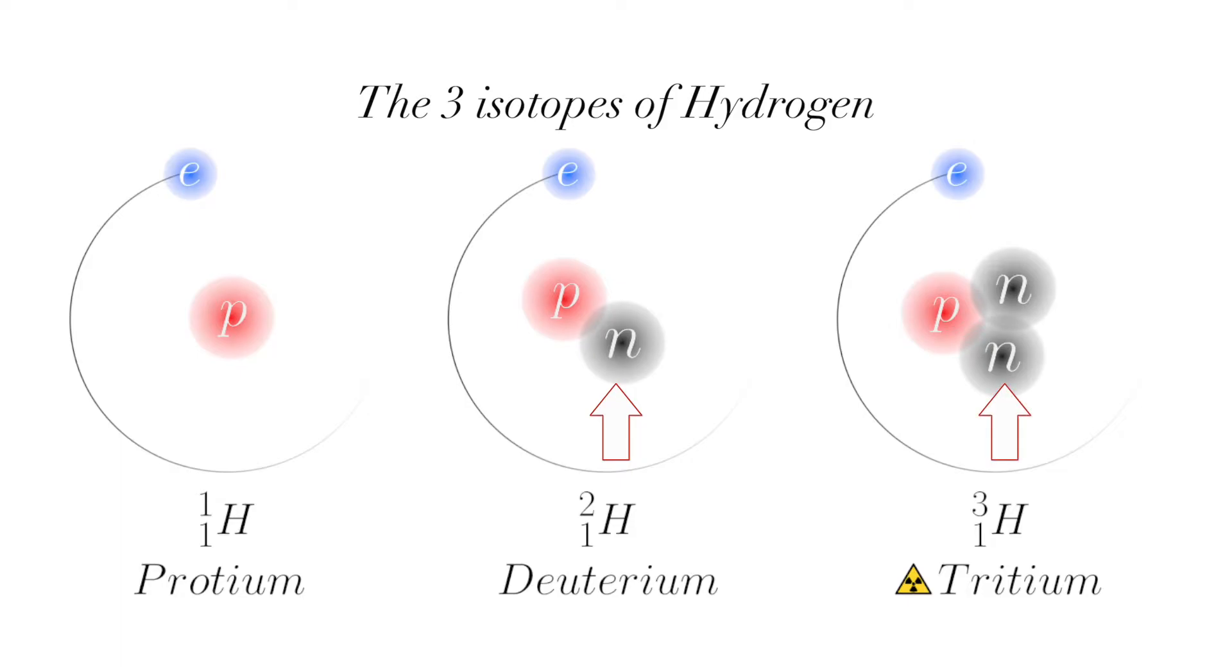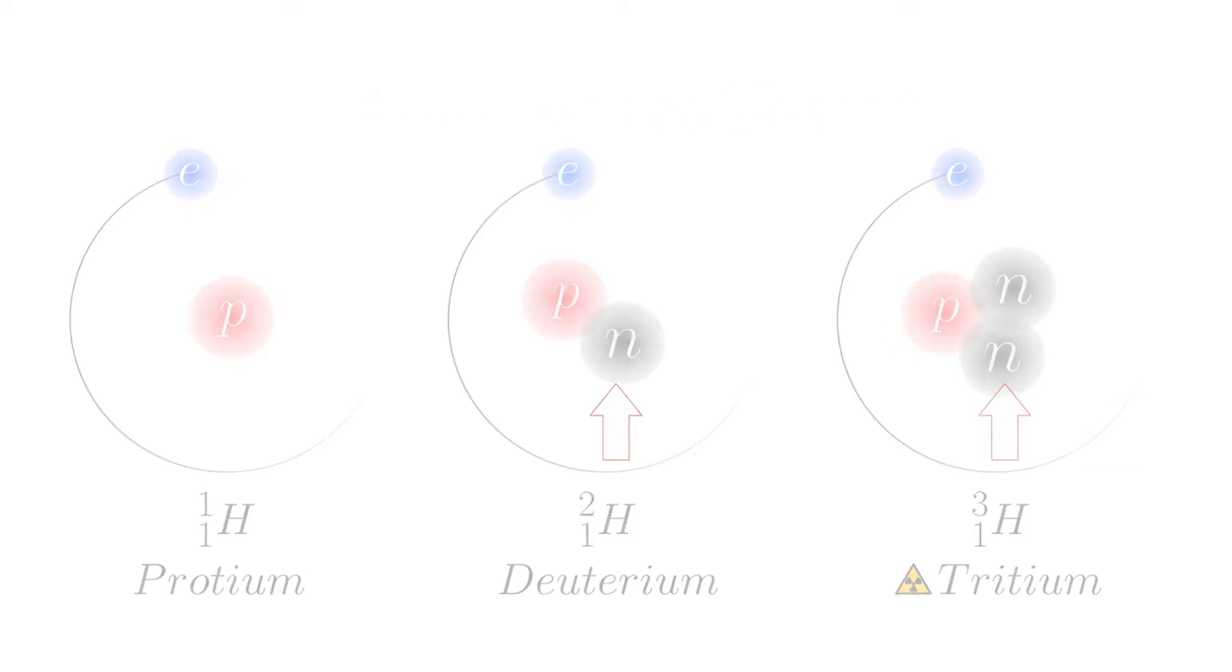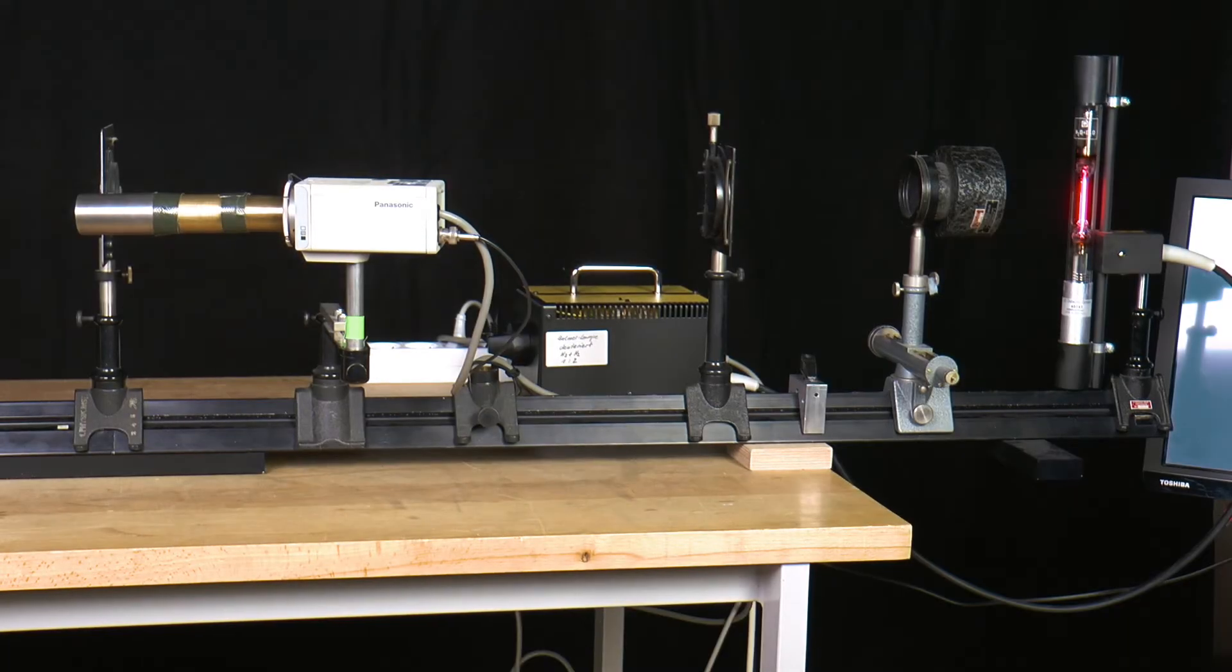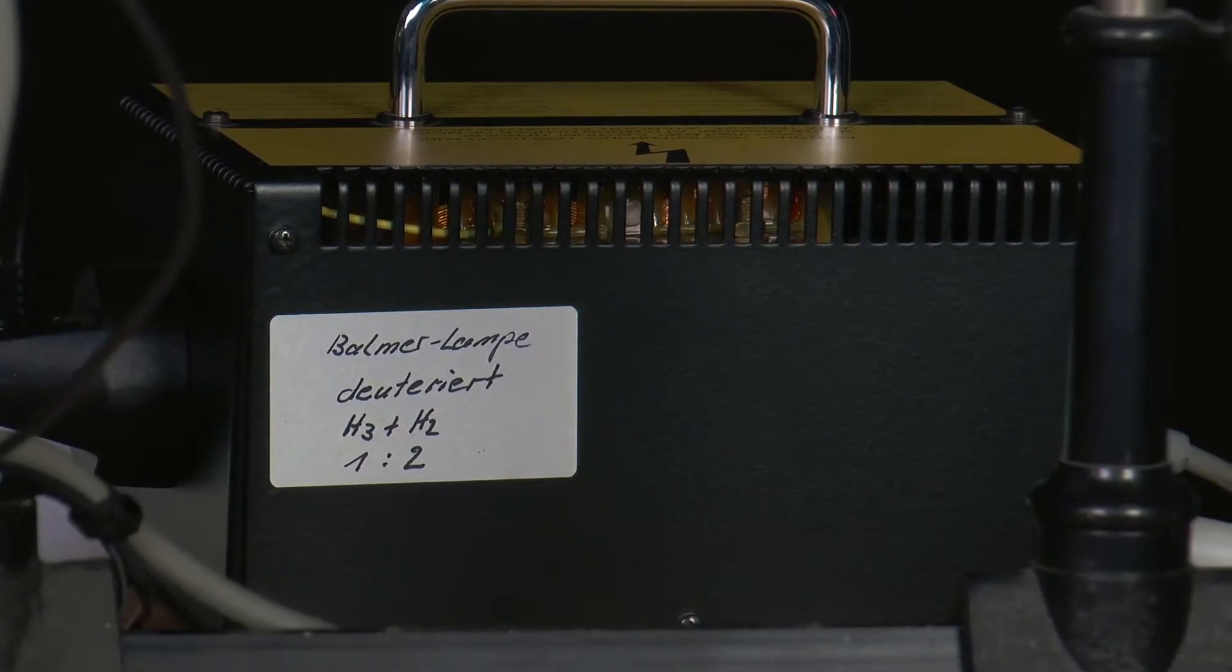In the following, the spectra of pure hydrogen and a mixture of protium and deuterium are compared. The experimental setup consists of a pure hydrogen lamp and a deuterated hydrogen lamp consisting of 10% protium and 90% deuterium.